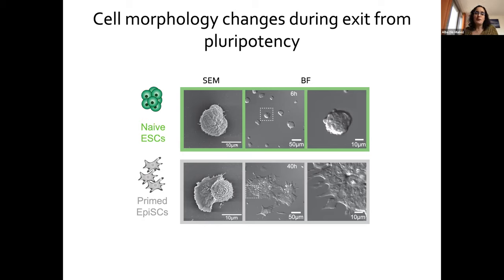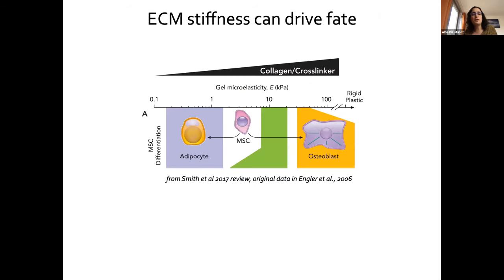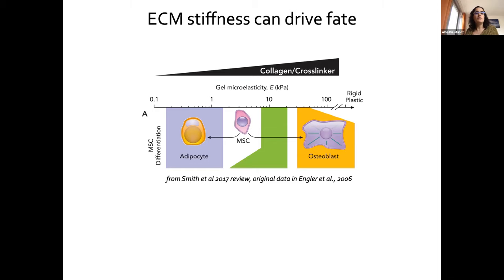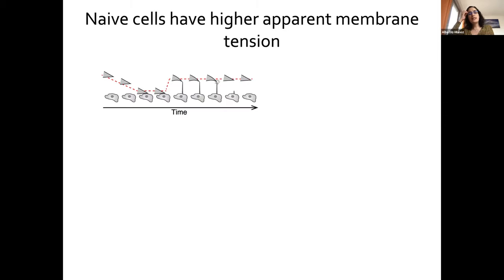Another reason to look at mouse embryonic stem cells is the seminal work of the Discher lab, which showed that for mesenchymal stem cells, depending on substrate stiffness, they would become whatever that substrate resembled. Plate them on something really soft and cells become adipocytes; plate them on something really stiff and cells become osteoblasts, like bone. So we knew extracellular mechanics matter for differentiation. Our question was: what about intracellular mechanics? The first thing we did was measure apparent membrane tension using an atomic force microscope to pull a plasma membrane tube.